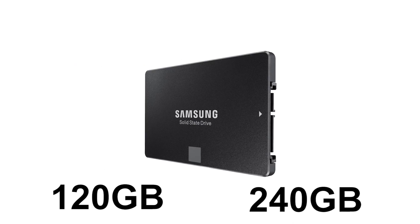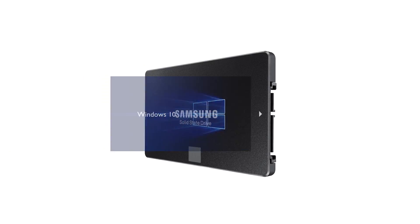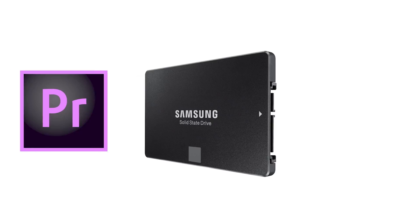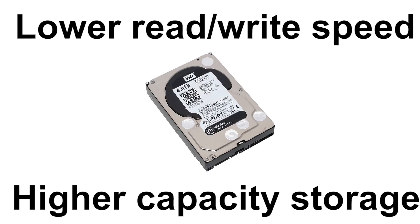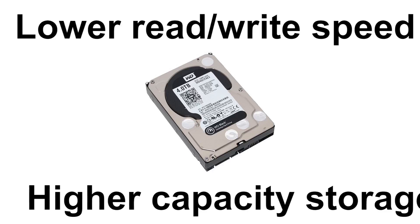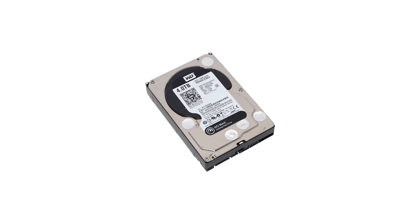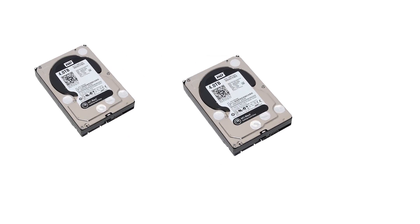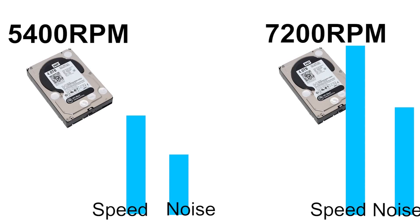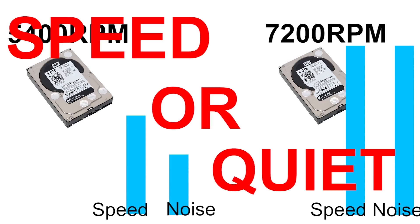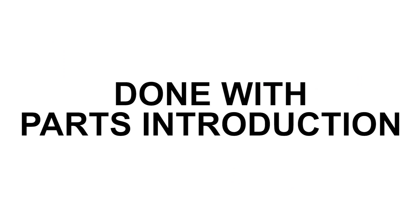Get a 120 or 240 gigabyte solid state drive for the operating system and applications for faster boot times. Add a hard disk for higher capacity storage at lower speed — get a one or two terabyte hard drive. The 5400 RPM hard disk runs slower but quieter with less vibration than the 7200 RPM version. Speed or quiet — you choose.